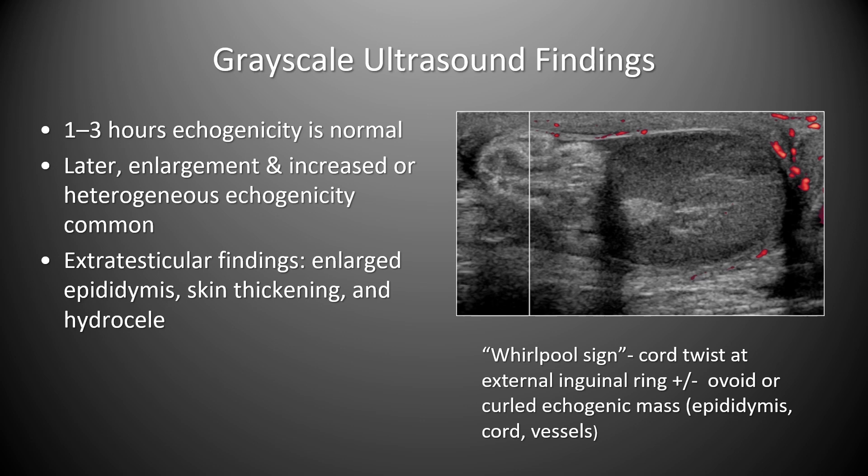The whirlpool sign is the most specific sign of testicular torsion and describes a twisted cord at the external inguinal ring with or without an ovoid curled echogenic mass representing the epididymis, cord, and vessels, as seen in this image. There is no flow within the testis, and there is this curvilinear echogenic mass — the whirlpool sign.